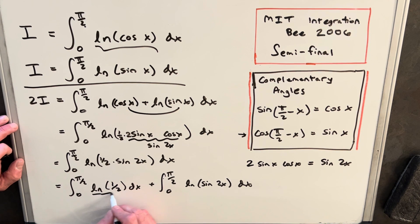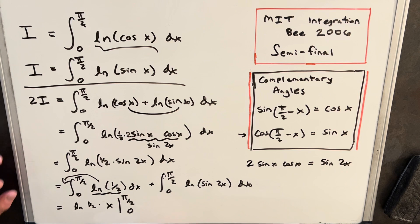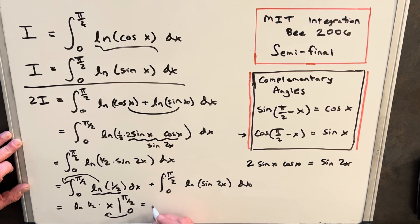Now ln 1 half is just a number, so we could pull this outside of the integral, and we just have a simple integral of 1. So this piece is just going to be ln 1 half times x, evaluated from pi over 2 to 0. When we plug 0 in, we just get back 0, so we're just evaluating ln 1 half times pi over 2. So we can write this first integral as just pi over 2 times ln 1 half.